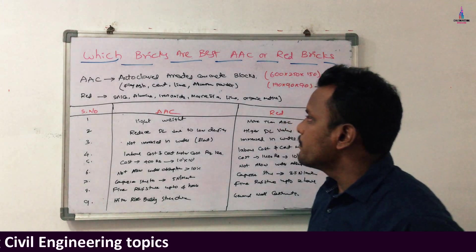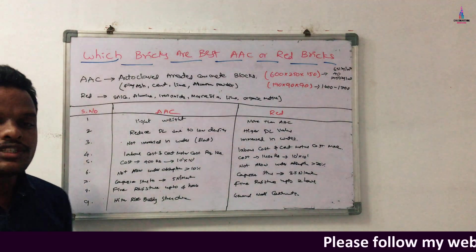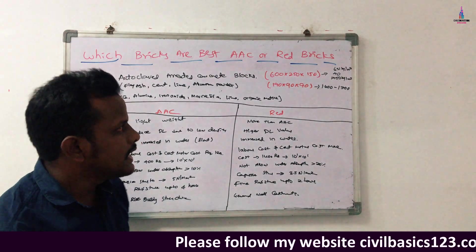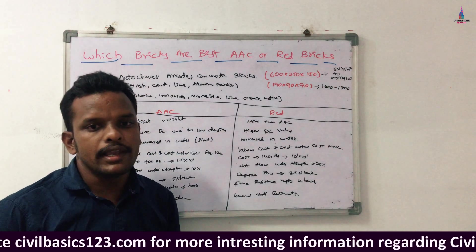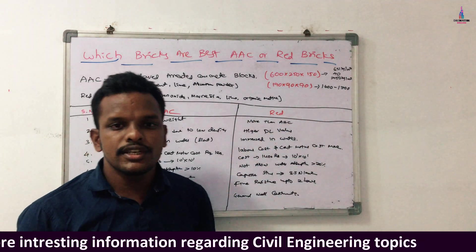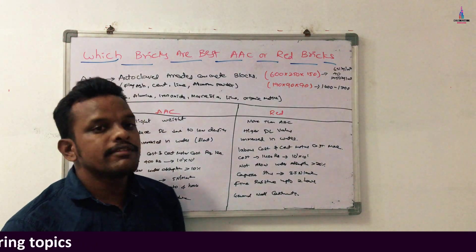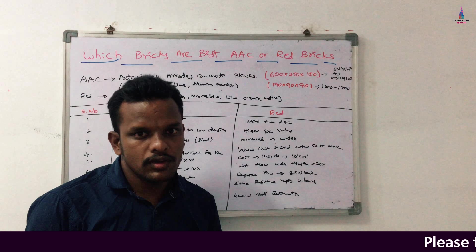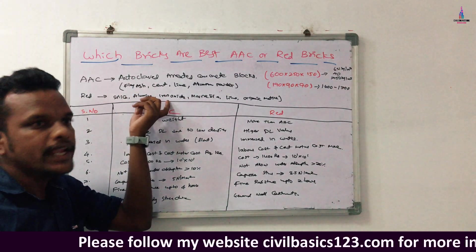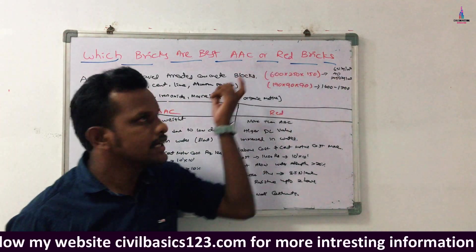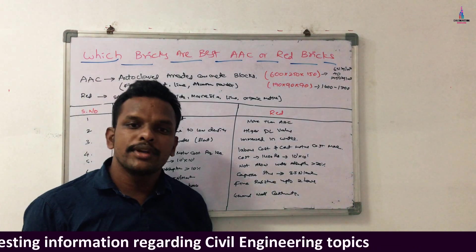In AAC blocks, due to the presence of fly ash, cement, lime, and aluminium powder, the weight of the block is reduced, and the density also decreases. The density of AAC blocks is 651 kg/m³ to 750 kg/m³, whereas red brick blocks have a density of approximately 1600 kg/m³ to 1700 kg/m³. Due to the lower density, AAC blocks are lightweight compared to red brick blocks.